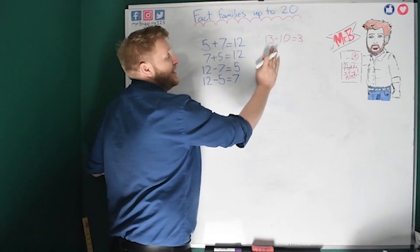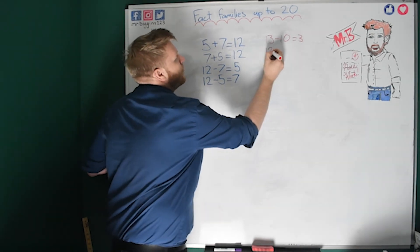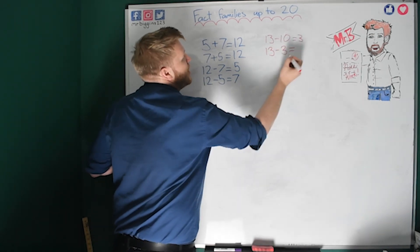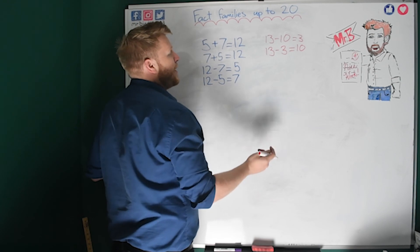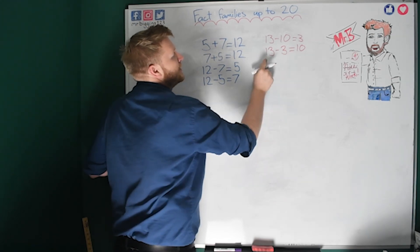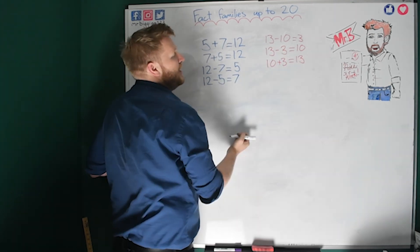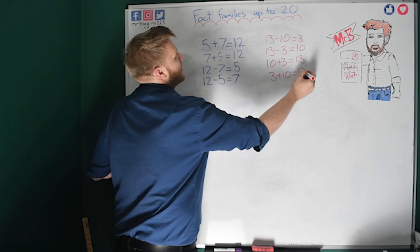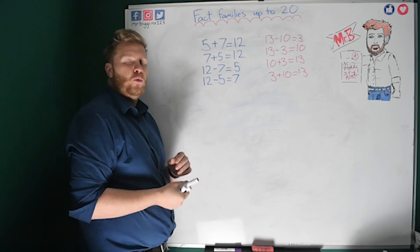For question 2, I've got my take-away so I'll do the other take-away first: 13 take away 3 equals 10. Now for additions, my 2 smaller numbers come together to equal 13: 10 plus 3 equals 13, and swapping over: 3 plus 10 equals 13. There are my fact families! I hope that helps you do your maths a little bit quicker without having to work out every sum. Until next time, see you later!